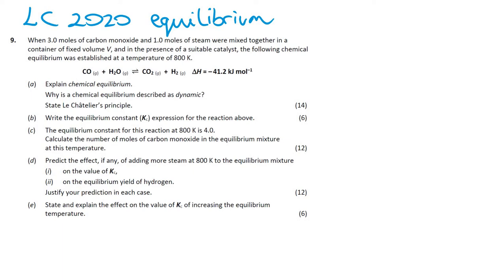Here I'm going to go through a Lievenster paper question 9 from 2020. It's a question on chemical equilibrium. The equilibrium questions usually follow a pattern: start with a couple of definition questions, then go into a bit of understanding and some calculation.